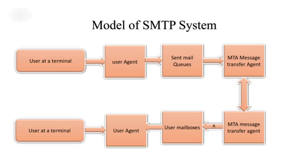SMTP is a simple ASCII protocol based on the client-server model. After establishing the TCP connection, the sending machine operating as the client waits for the receiving machine operating as the server to talk first. The server starts by sending a line of text, giving its identity and indicating whether or not it is prepared to receive mail. If it is not, the client releases the connection and tries again later.